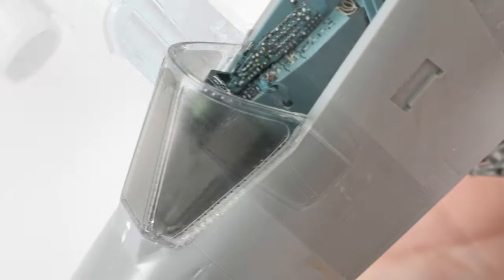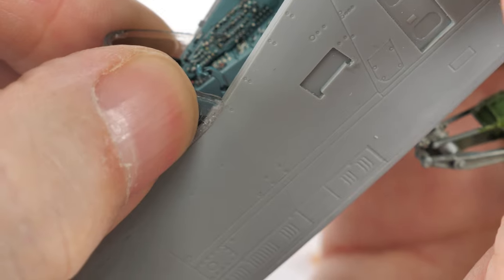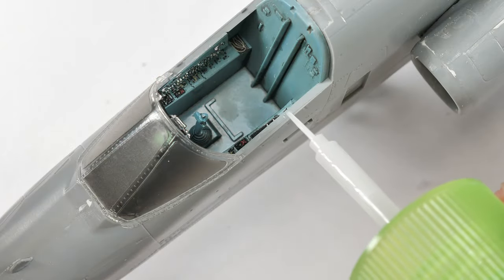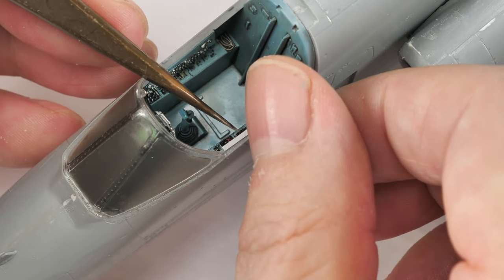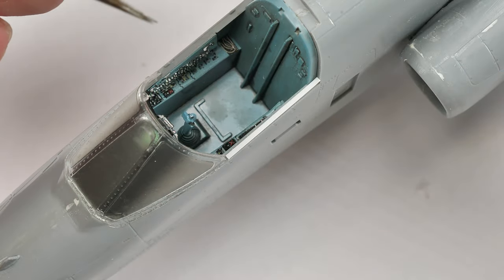And we also attach the front part of the canopy. It doesn't fit too well, but the plastic is flexible. Flex it in position. I glue on one side and then hold it on and you will get a really good fit with that canopy section.